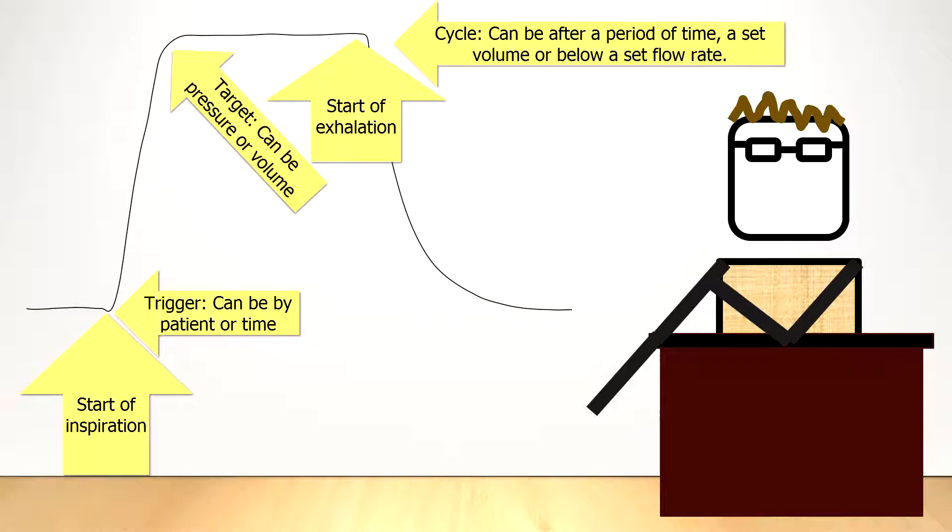When volume is the controlled variable and the target, then cycling occurs when the set volume has been delivered.